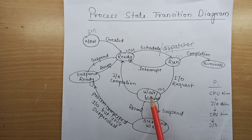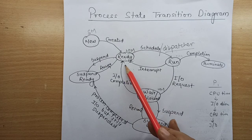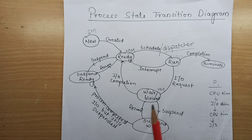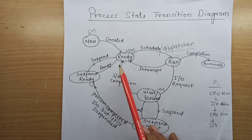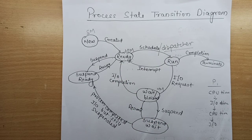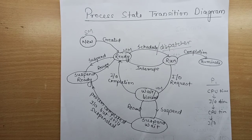Once those processes complete their I/O operation, they do not go directly to the run state. After completion of I/O, they go back to the ready state. The waiting state is the state where a process is waiting for some event to occur, such as I/O completion or reception of a signal. After completing that event, the process goes back to the ready state, signaling it is ready to be assigned to the CPU.